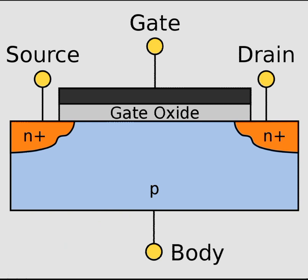This is a unipolar device, as opposed to the bipolar junction transistor which is bipolar. In a BJT, current conduction takes place due to both types of charge carriers — electrons and holes. But in a FET, current conduction takes place due to only one type of charge carrier at a time.